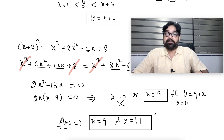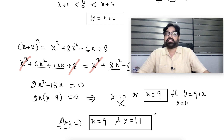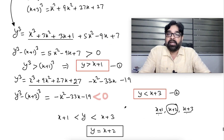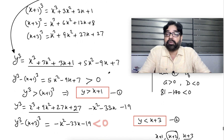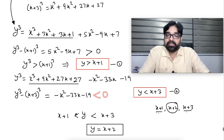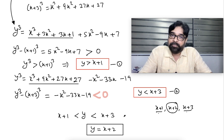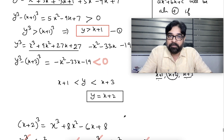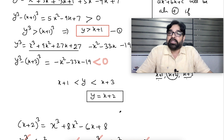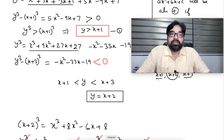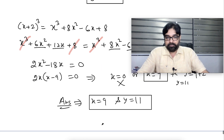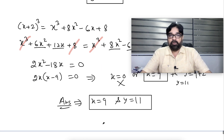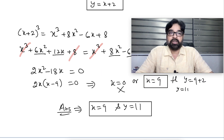That's the only positive integral solution. The key idea is: when two variables are given as integers, try to bound one variable in a range, identify the only integer in that range, and reduce to a single variable. This is one type of problem you'll encounter, and seeing different question types helps you build ideas for when you attempt them. Thank you very much, and see you in the next question.